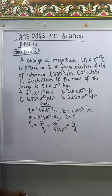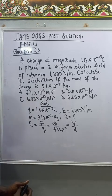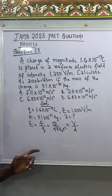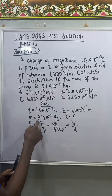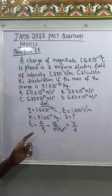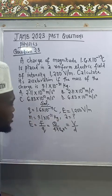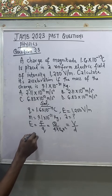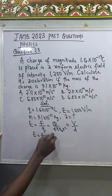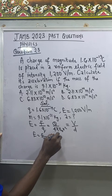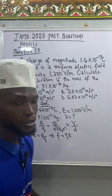Now out of this, this formula will actually work because it's the one that has most of the things that we need. So I can say E equal to f over q. If I make f the subject of formula that means f will be equal to q times E. Now this is the force that act on the charge.